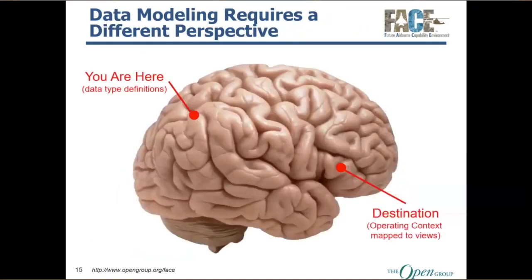Now we start talking about data modeling. I like to start with this picture because there are a lot of folks on the call with background in software engineering who are used to developing data types — descriptions focused on data structure, intended to be an efficient way of structuring the storage of information for retrieval and use. That's what data types are, and most folks are starting over here — this is what we're used to from years of software work.